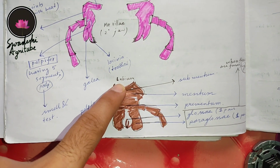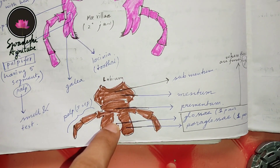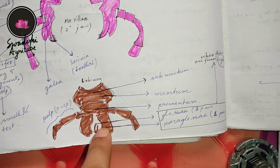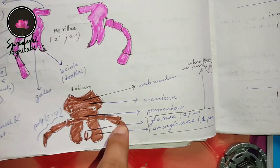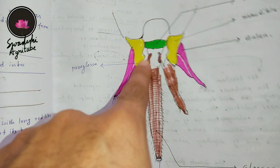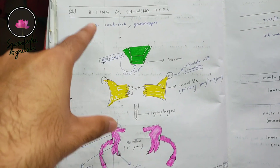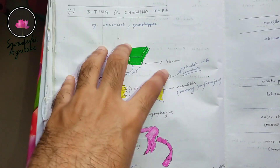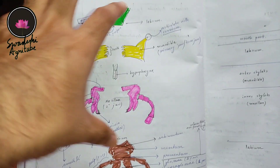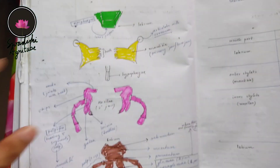Similarly, the labium — the lower lip — has two structures: inner and outer. The inner is called glossa and the outer is called paraglossa. This same glossa has actually changed into the flabellum in the chewing and lapping type of mouthparts. So all you need is a detailed study of the biting and chewing type of mouthparts, as it is actually the base for comparing and remembering the others.